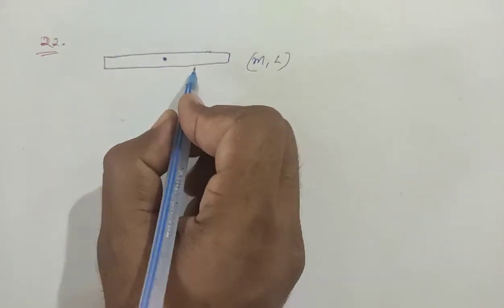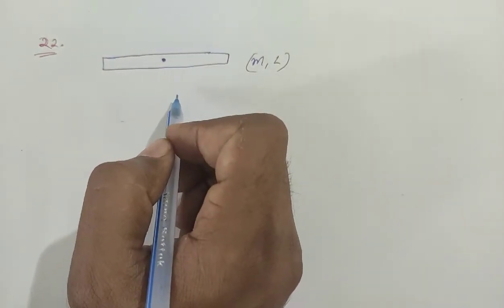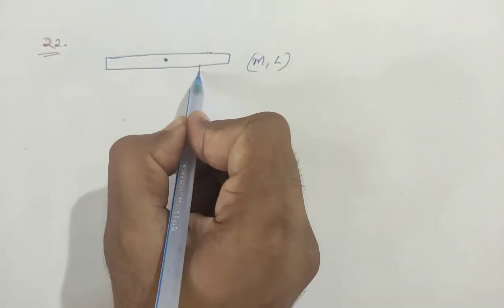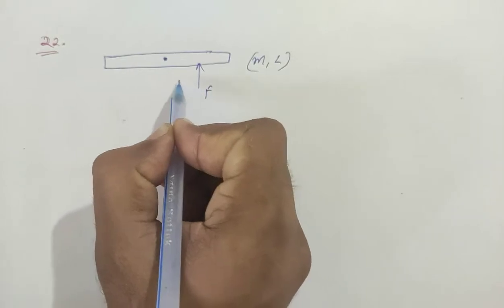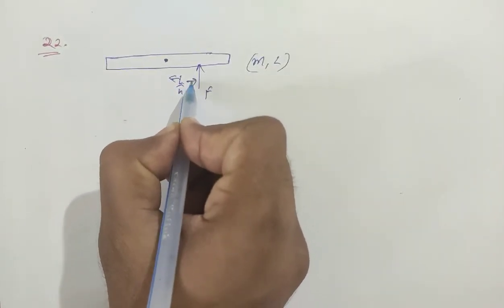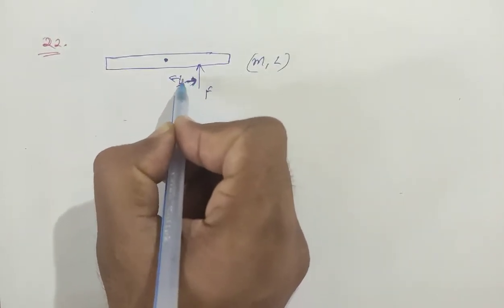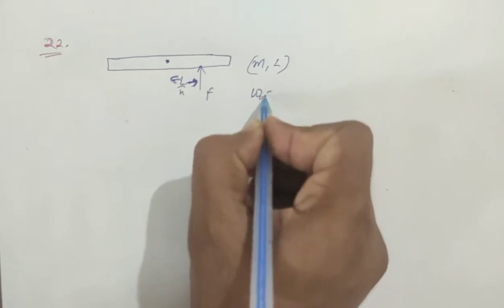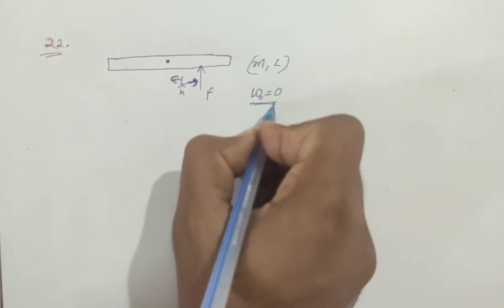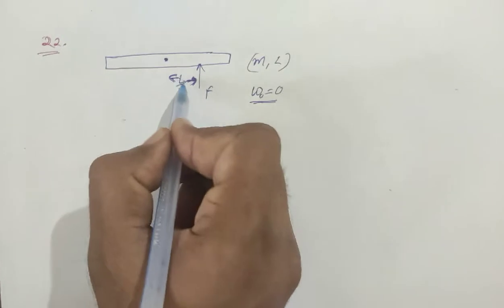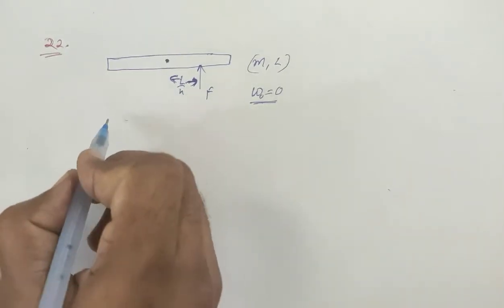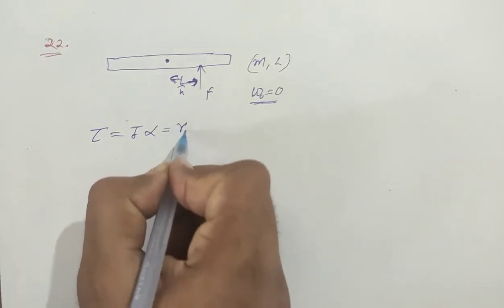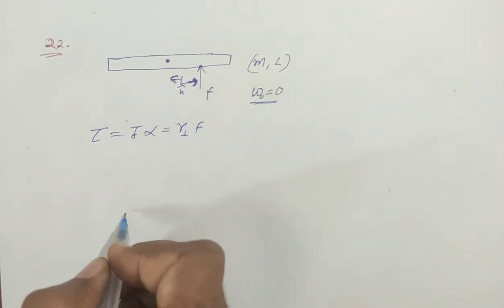The force is applied at a distance l/4 from the center. So torque — how much torque? Torque equals I times alpha, or R-perpendicular times the perpendicular force. Right?